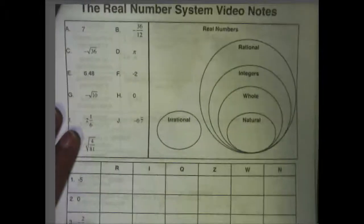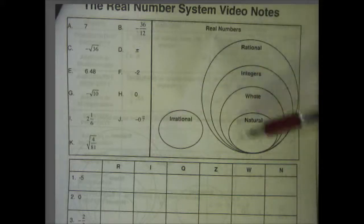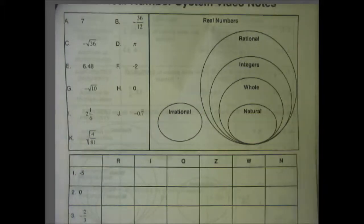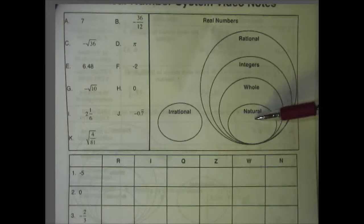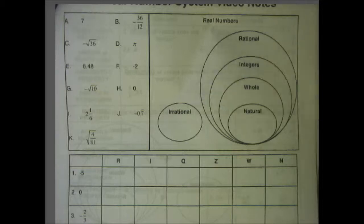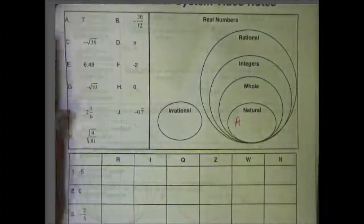So the real number system video notes — let's take a look at those. What we want to do is take these numbers on the left and put them where they go on the chart, looking for the first category they would fit into. Natural includes the smallest amount of numbers, whole includes one more than natural, integers includes quite a few more, rational includes more than integers, and irrationals is over here by itself. If I looked at the number 7, I know that 7 is rational, an integer, and whole, but the very first category it comes under is natural. So I'm going to put A under natural numbers.